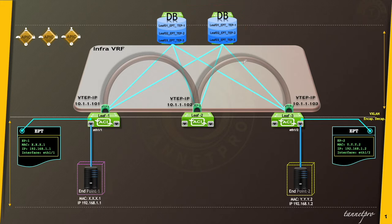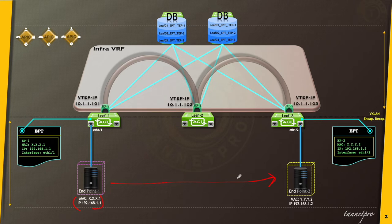Now let me explain scenario three. Our scenario is: what if the destination is on another leaf and that leaf switch doesn't know that endpoint? This endpoint wants to communicate with another endpoint, but the source leaf switch doesn't know the destination. Let me explain step by step. Keep focused on this slide — it is very important.